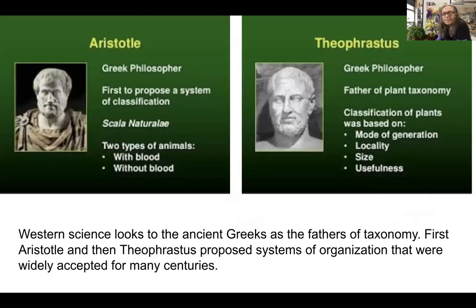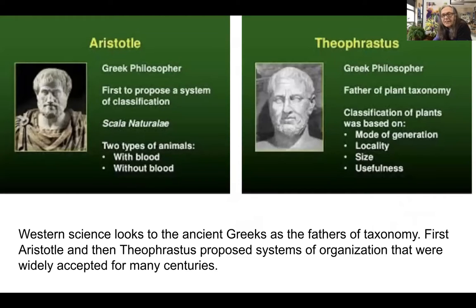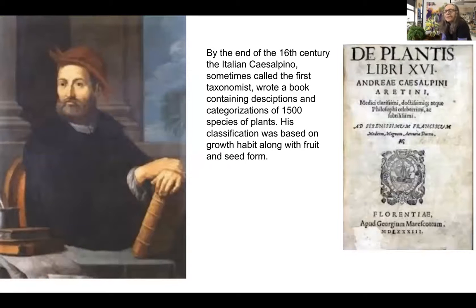In Western European culture, we look to Aristotle, who proposed a system with two types of animals: those with blood and those without blood — basically the vertebrates and the invertebrates. Then there was Theophrastus, who classified plants, using categories of usefulness, size, where they were growing, and how they reproduced. That system lasted from around 300 BC up until the 16th century.